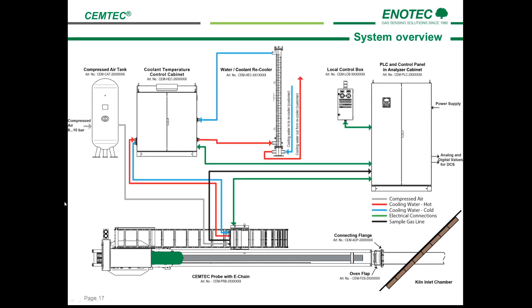Here is an overview of the CEMTEC system: the 1,000-liter compressed air tank, the coolant temperature control cabinet, and the water coolant recooler. An air coolant recooler is also available depending on the requirements at site. Here you see the local control box, and here we have the PLC and the analyzer cabinet. Because Enotech is also a system integrator, we are able to deliver the CEMTEC system and the gas analyzing cabinet if required. Should a functioning analyzer cabinet be available at site, this can easily be connected to the CEMTEC system. Finally, we see the probe and the flange seal.